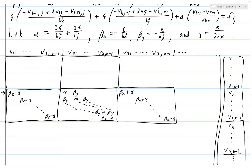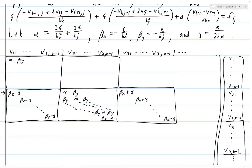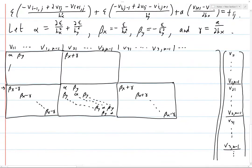Looking at the first row of the block matrix structure (i=1, j=1): associated with v_{1,1} we have α. v_{1,0} is set to 0, so it doesn't get included; v_{1,2} gives a β_y. v_{0,1} isn't in our system, so there's nothing there. But v_{2,1} does contribute, giving β_x + γ, for the same reasons as before. The rest fills in with the same tridiagonal structure, with α, β_y on the main block diagonal and β_x + γ on the upper off-diagonal.